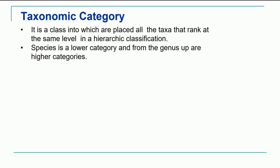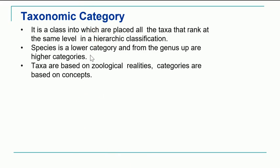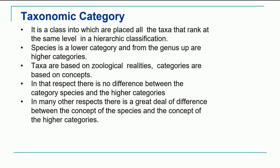Species is the lowest category, though sometimes subspecies can also be referred to as the lowest. From genus you go to the higher categories up to kingdom or domain. We can differentiate between taxa and category: taxa are always based on zoological realities, whereas categories are based on concepts. All categories like kingdom, division, class, order, family, genus, and species are based on certain concepts — that is, on similarities or differences. There is also a great deal of difference between the concept of species and the higher categories like order, family, and kingdom.